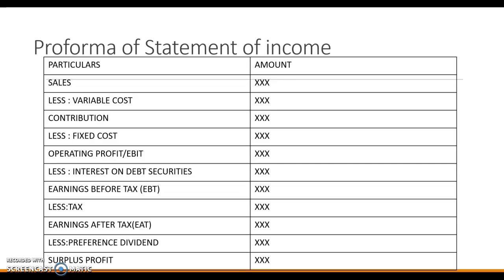We will look at a statement of income to see how EBIT, EBT, and surplus profits are determined. We begin with sales. From sales, we deduct variable cost to get contribution. From contribution, we deduct fixed cost to get operating profit, also known as EBIT — earnings before interest and taxes. We then deduct interest on debt securities, which is a compulsory payment, to get earnings before tax. After deducting tax, we get earnings after tax. Finally, deducting preference dividend gives us surplus profit — the earnings available to equity shareholders.